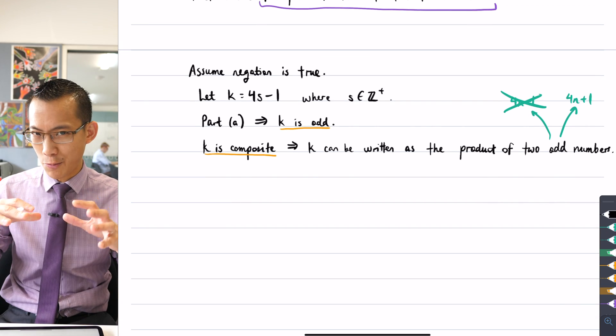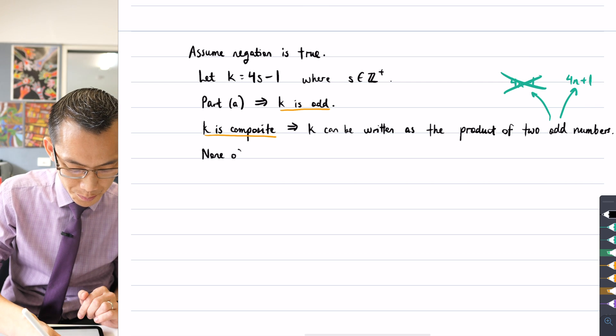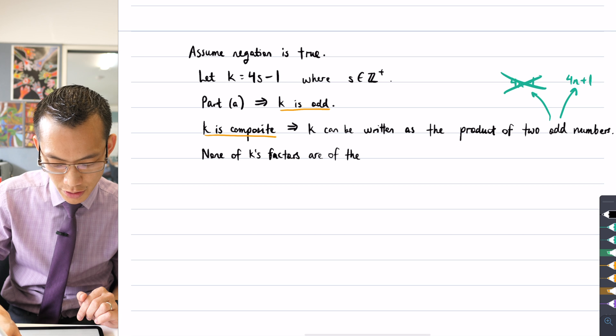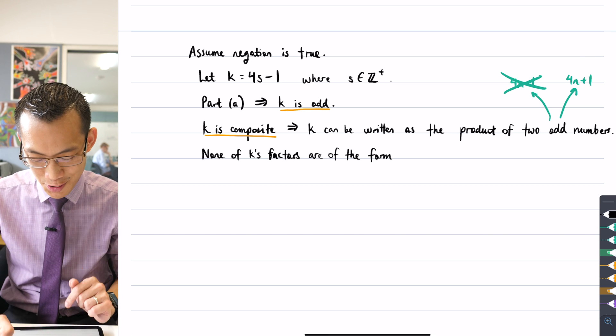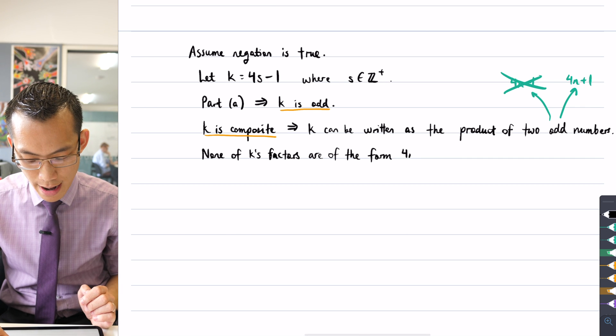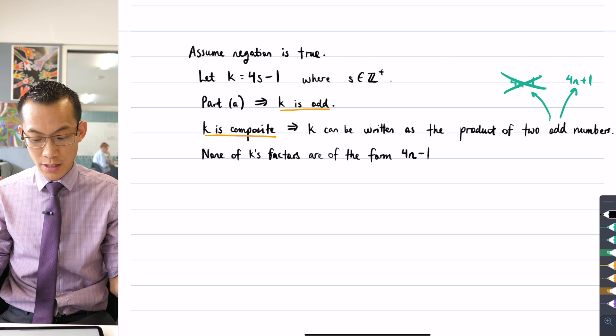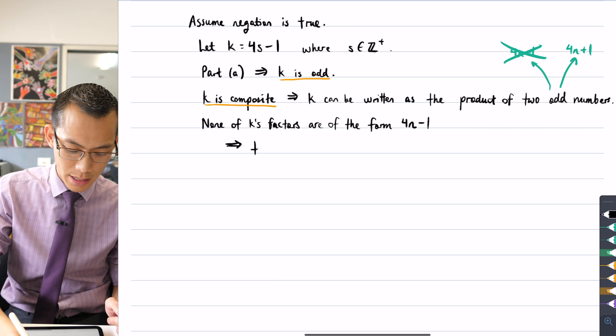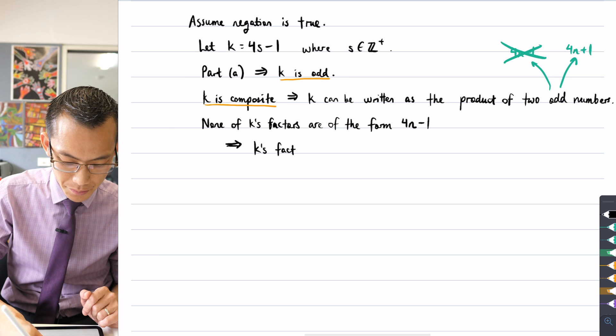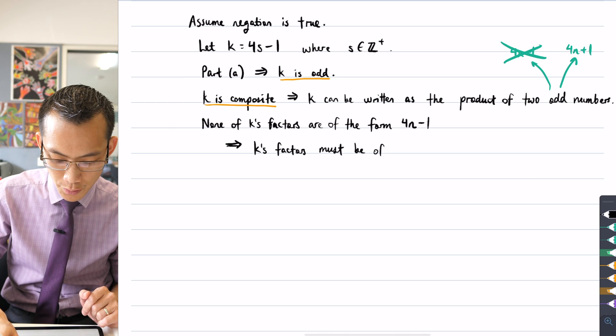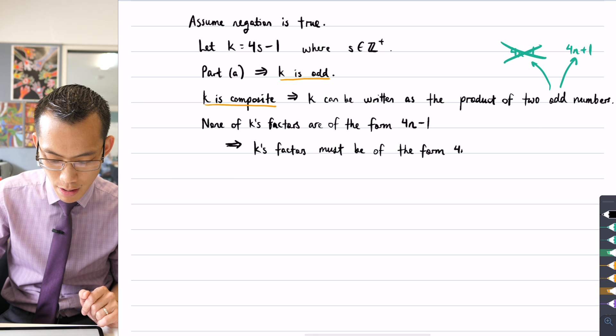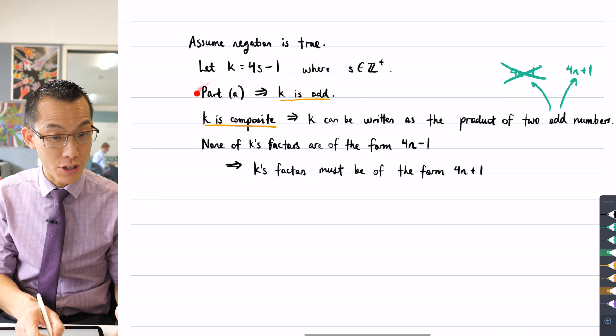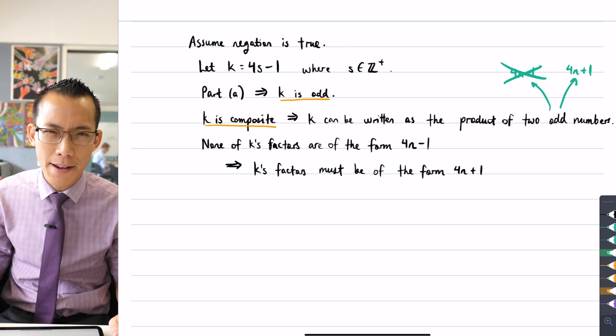So how do I use that? Well, if they're not of the form 4n minus 1, because the factors have to be odd, they have to be the other kind of format. We saw in part A, if you got an odd number, you can either write it as 4n minus 1 or you can write it as 4n plus 1. But according to this assumption, we know that none of the factors can be of this form 4n minus 1. So we can eliminate this. So now what I can say is, none of k's factors are of the form 4n minus 1.